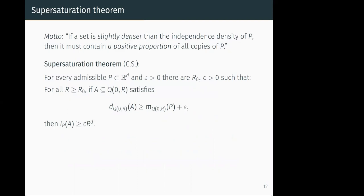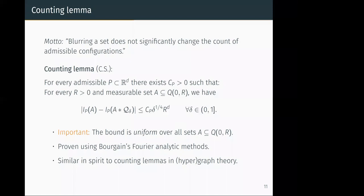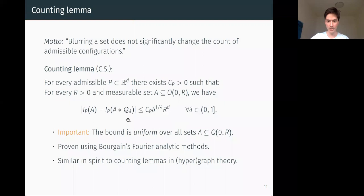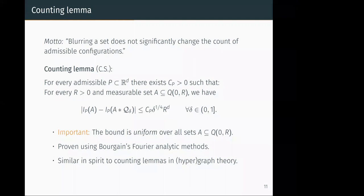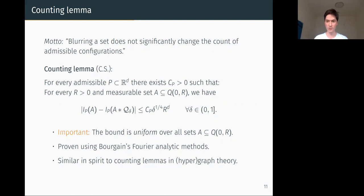Audience question about the analogy with hypergraph counting lemmas: in the discrete graph setting, one replaces edges by the edge density between irregular vertex classes. The convolution here is analogously an averaging over cubes, and we compare copies of P in A with copies in an averaged version of A. The spirit is the same — showing that a 'regularized' version of a set has approximately the same substructure count as the original.